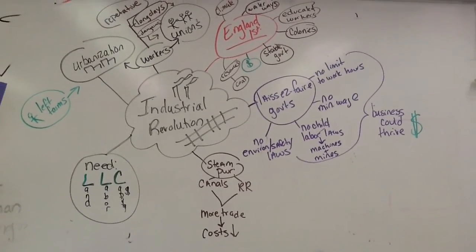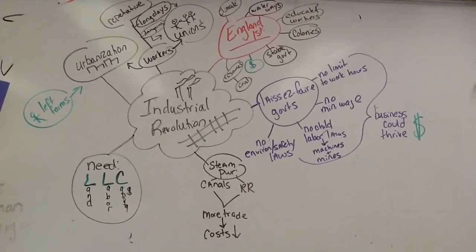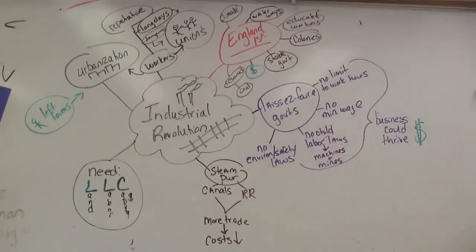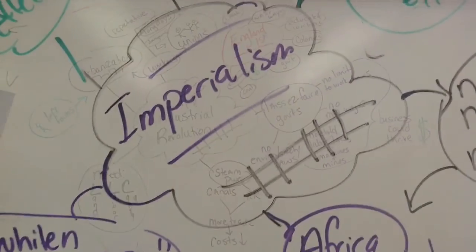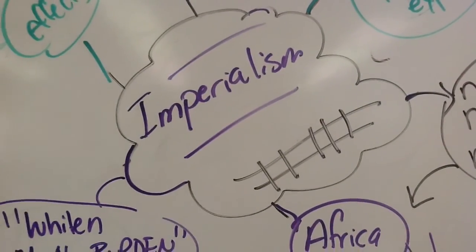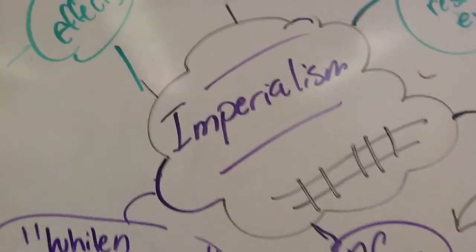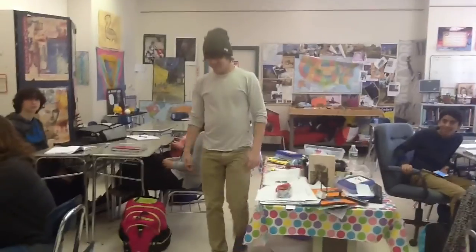The second part of the unit was on imperialism. The Industrial Revolution tied directly into imperialism — industrial countries were looking for land, workers, and resources.